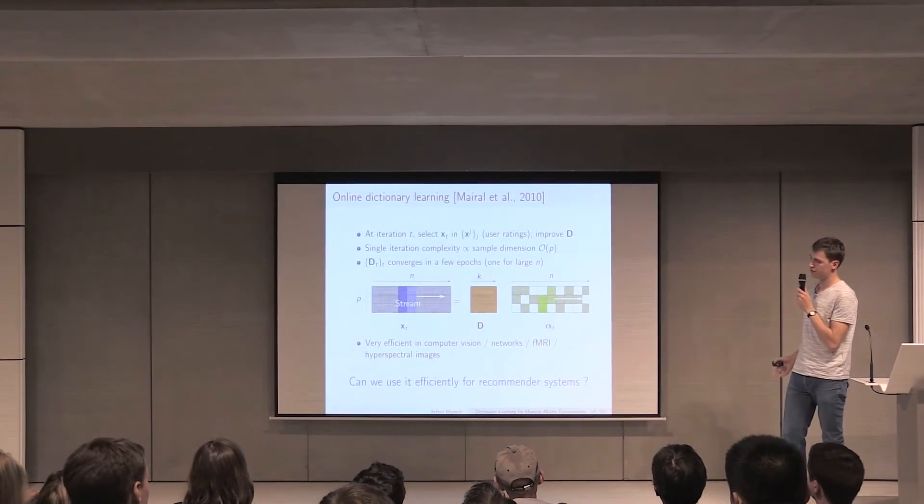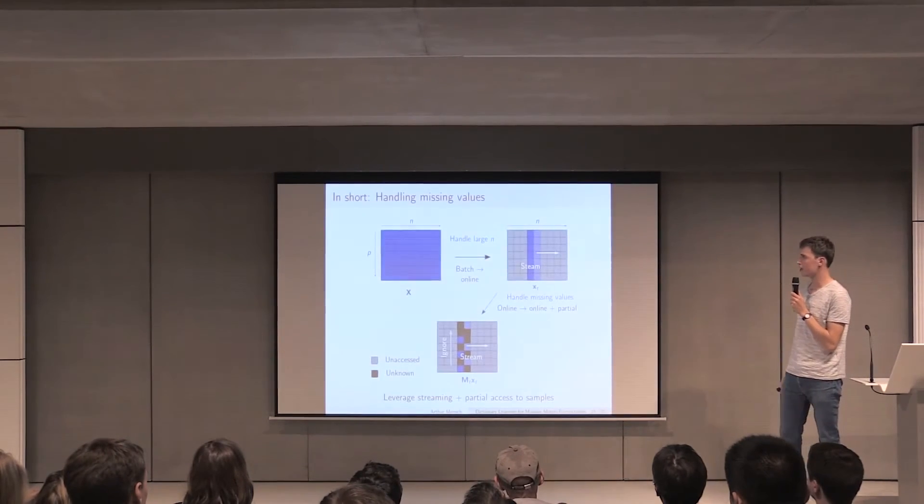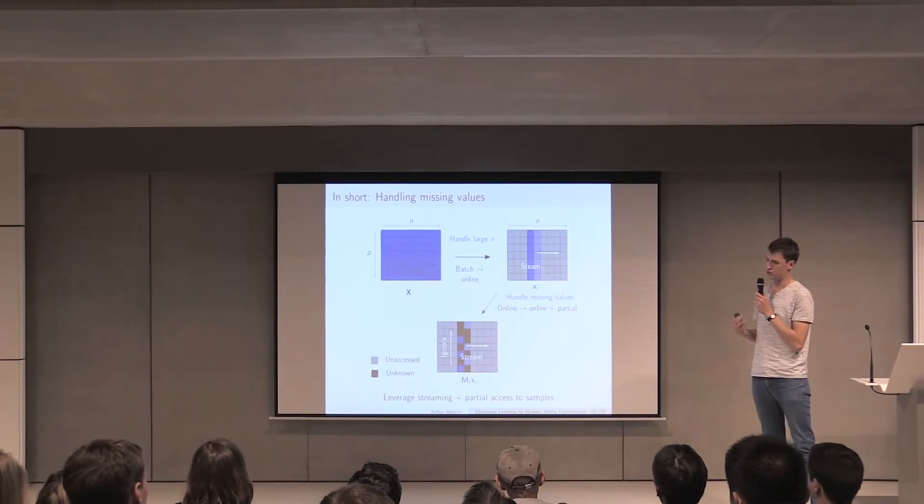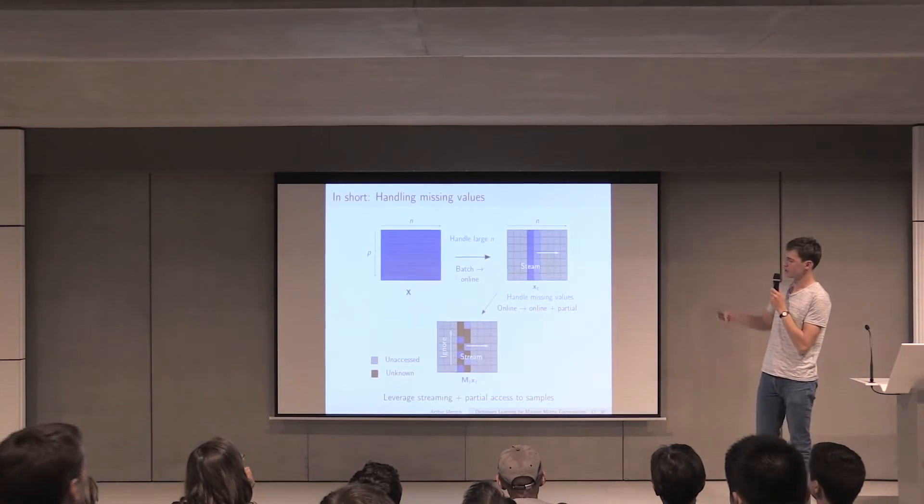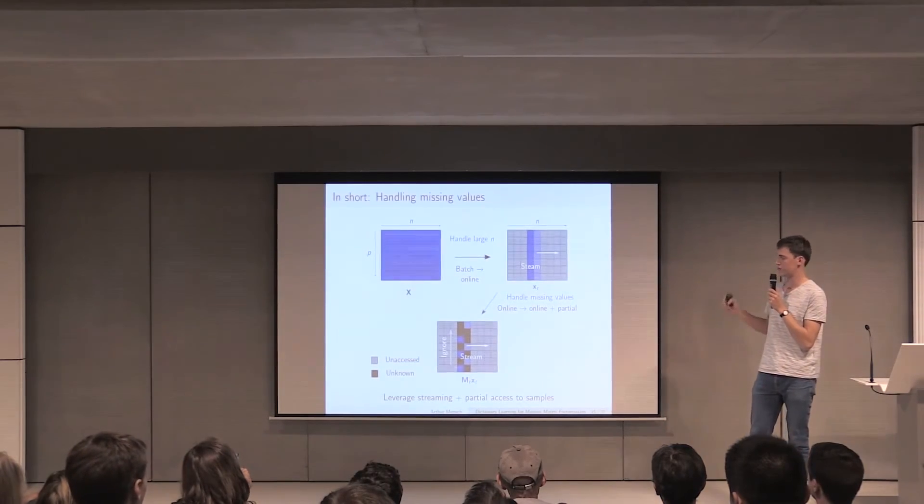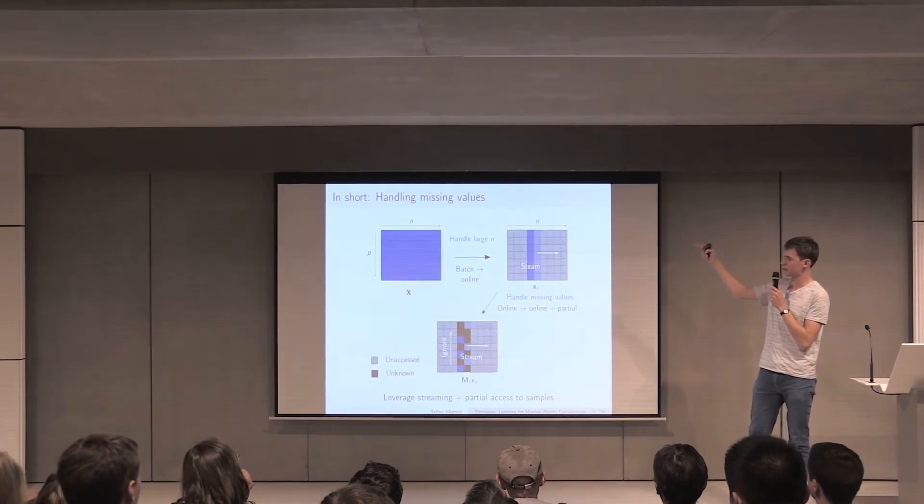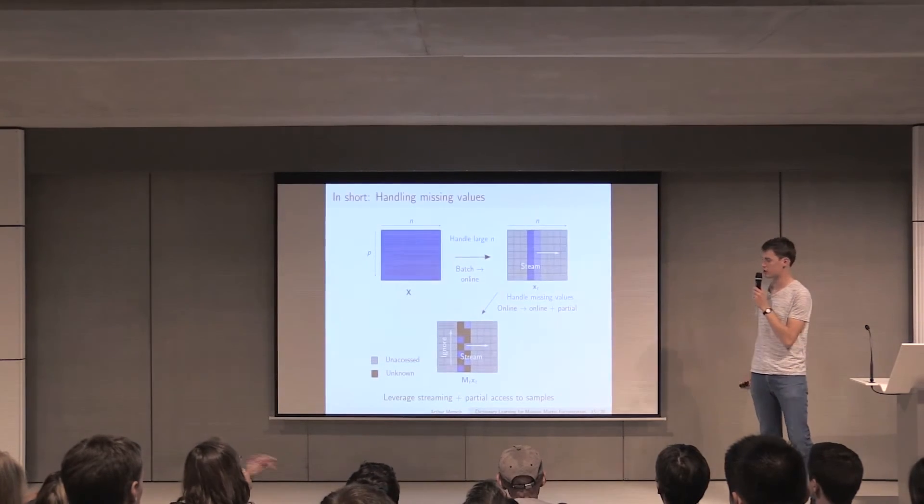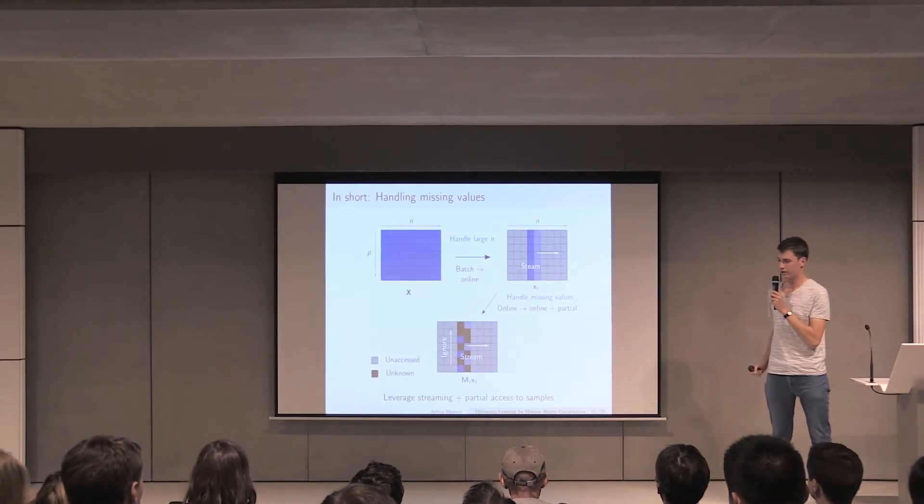The question is, can we use it efficiently for recommender systems where there is an additional constraint that we have missing values. In short, what we do in this algorithm is to go a step beyond the online algorithm. You can see that to go from the alternating minimization to the online algorithm, you go from looking at the whole matrix to looking at single columns at each iteration. In our case, we don't even look at single columns at each iteration, but we also ignore all the coefficients that were not provided by the users.